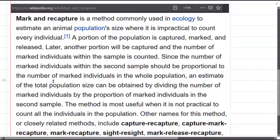Later another portion will be captured and the number of marked individuals within the sample is counted. The number of marked individuals within the second sample should be proportional to the number of marked individuals in the whole population.